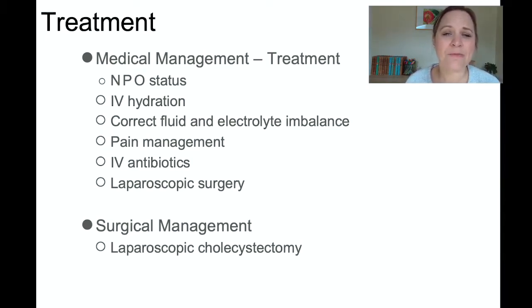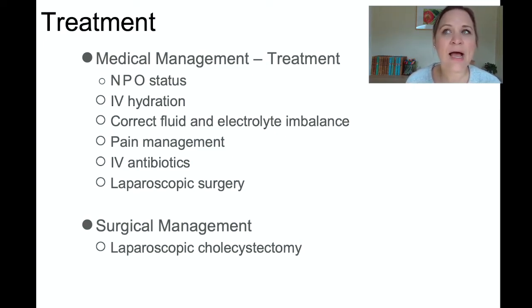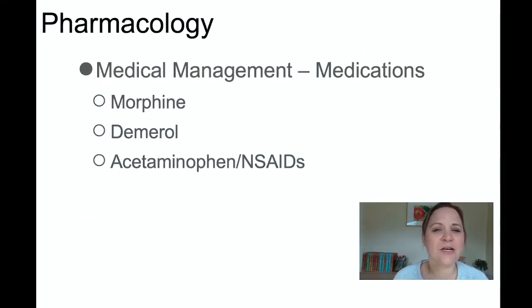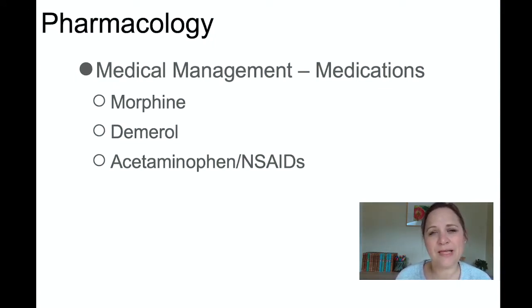In surgery, the patient will have their gallbladder removed. It turns out you don't actually need this holding reservoir for bile. It just means the patient may have a harder time with high fatty foods because they can't bolus themselves with bile the way they could with a gallbladder. Medications are usually going to be opioids — morphine or Demerol — as well as non-opioid medications like Tylenol or some NSAIDs.